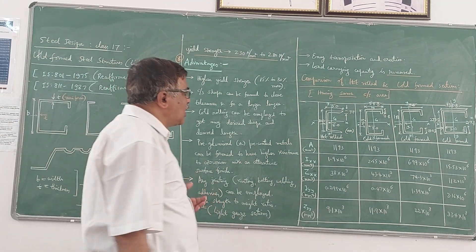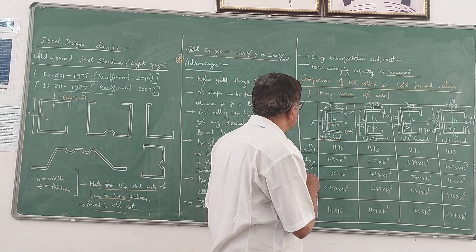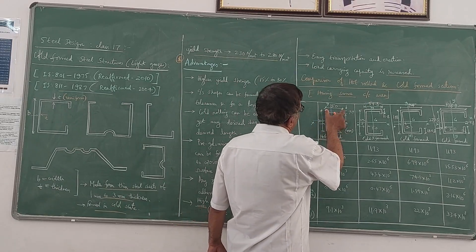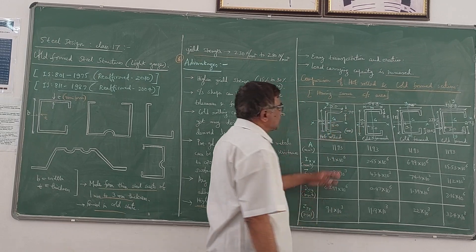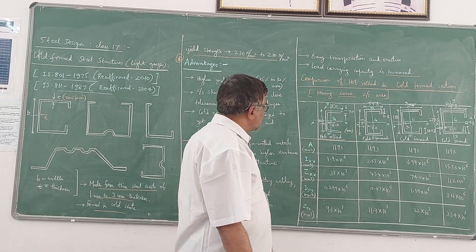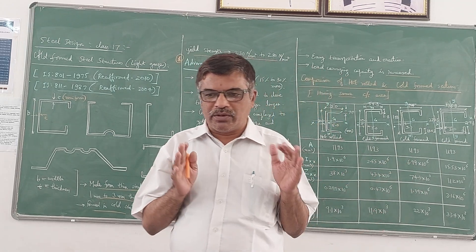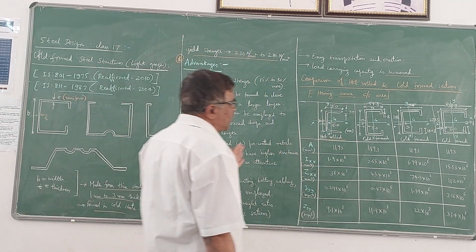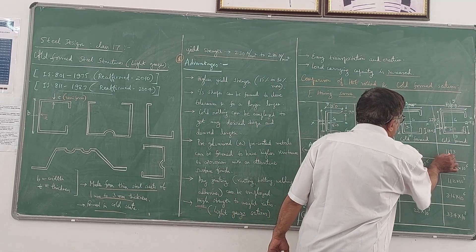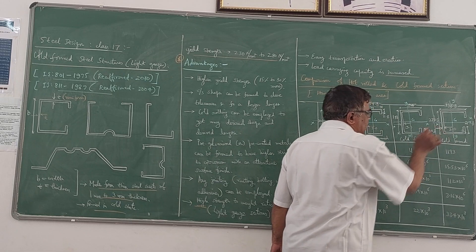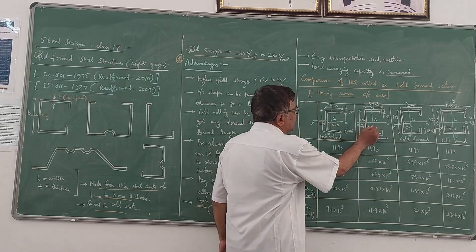A hot rolled channel section is considered with overall depth 100 mm, flange width 50 mm, flange thickness 7.7 mm, and web thickness 5 mm — note the different thicknesses. The area of this section is 1193 mm². Keeping the same area, three types of cold form sections can be produced: for 5 mm uniform thickness, the overall depth is 117.5 mm and flange width 58.8 mm with lip of 11.8 mm; for 3 mm thickness, depth increases to 188 mm, flange width 94 mm, lip 18.03 mm; and for 2 mm thickness, values increase further to 27.8 mm lips.